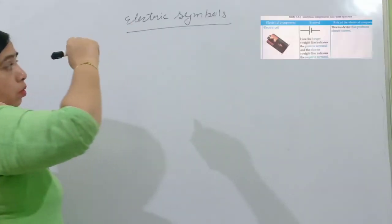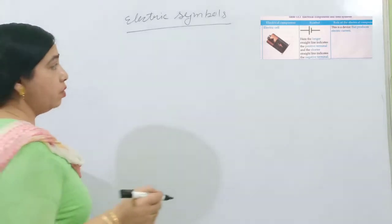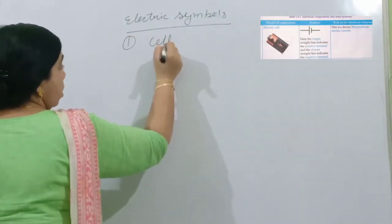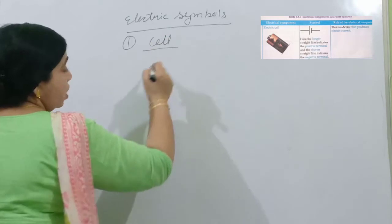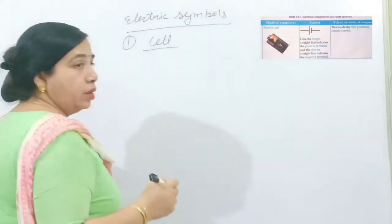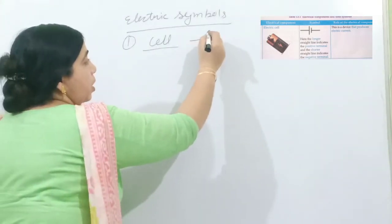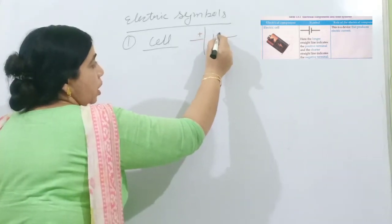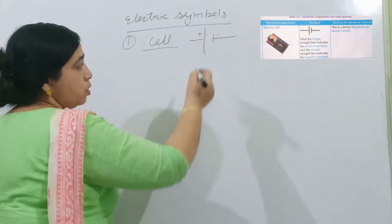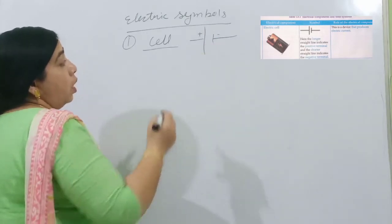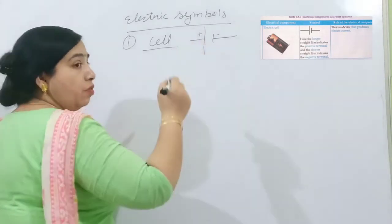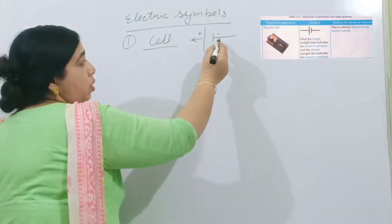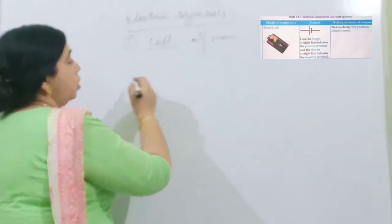Electrical symbols — whatever we are using in the circuit will be represented by electrical symbols. First, the cell: a cell is used to provide current and is represented by a big line for positive and a small line for negative. When current flows, it starts from the positive and enters the negative terminal.